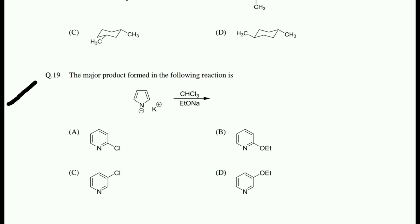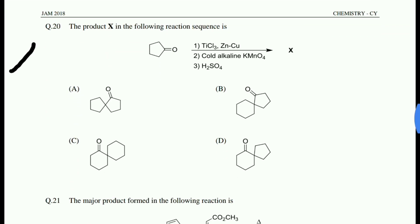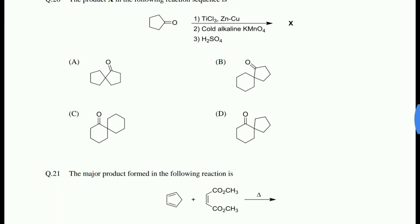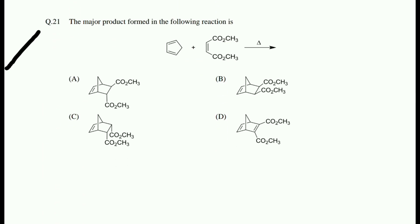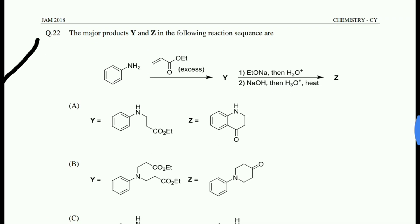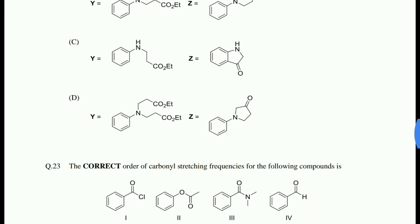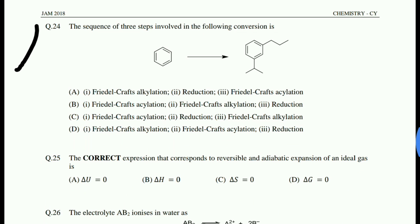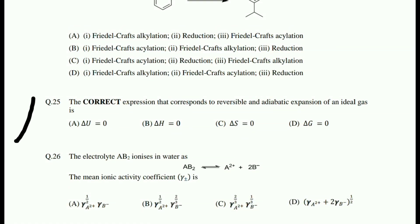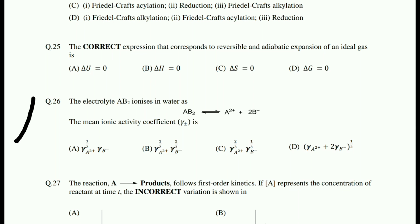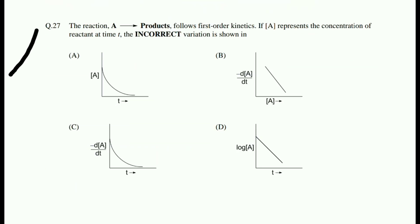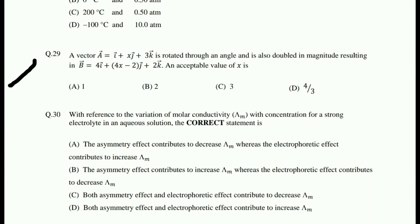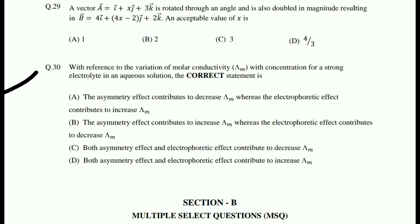Question 19 is heterocyclic organic chemistry. Question 20 is organic name reactions — McMurry reactions. Question 21 is from pericyclic chemistry. Question 22 is from organic name reactions. Question 23 is basic organic chemistry. Question 24 is from named reactions — organic. Question 25 is physical chemistry — thermodynamics. Question 26 is physical chemistry — conductance. Question 27 is chemical kinetics — physical chemistry. Question 28 is gases — physical chemistry. Question 29 is basic mathematical concepts — physical chemistry. Question 30 is physical chemistry — conductance.